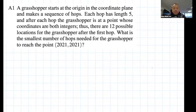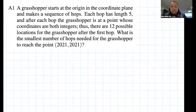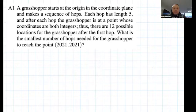A grasshopper starts at the origin in the coordinate plane and makes a sequence of hops. Each hop has length 5, and after each hop the grasshopper is at a point whose coordinates are both integers. Thus, there are 12 possible locations for the grasshopper after the first hop. What is the smallest number of hops needed for the grasshopper to reach the point (2021, 2021)?